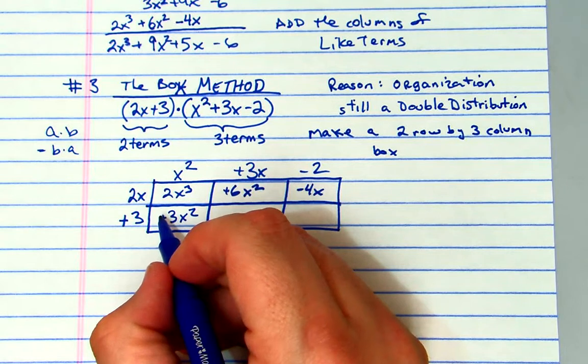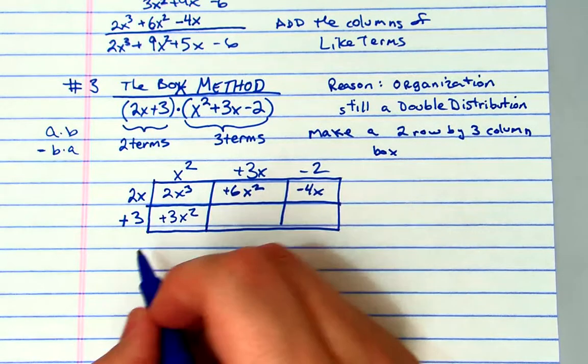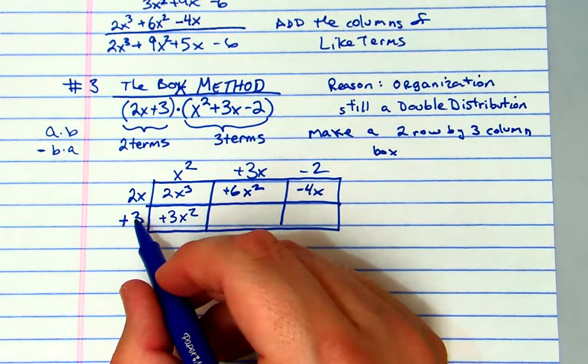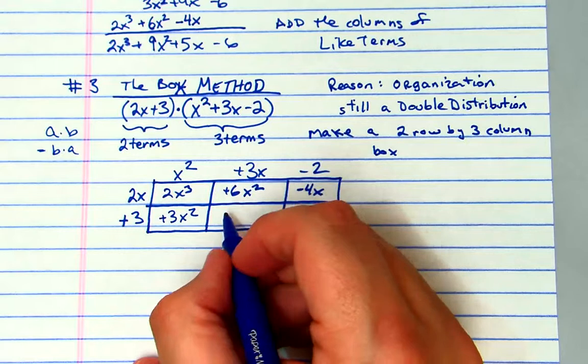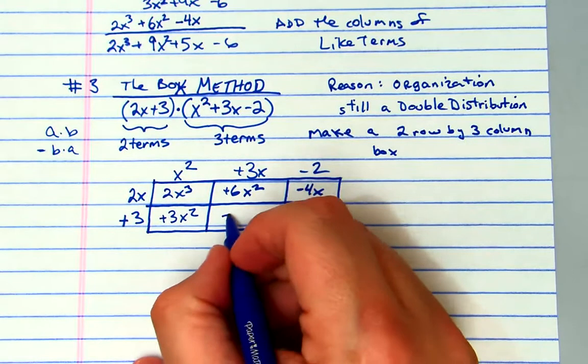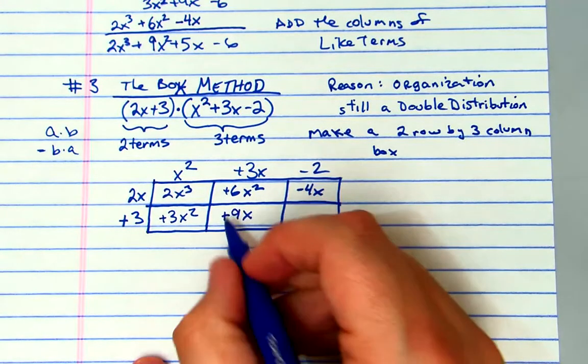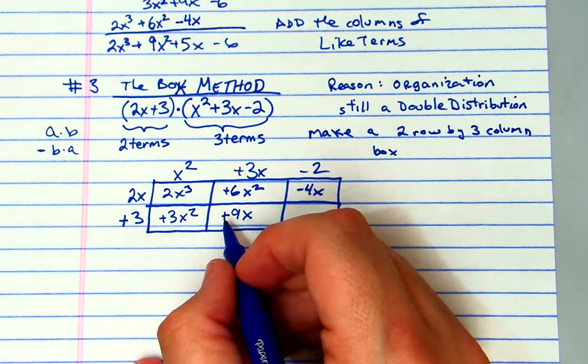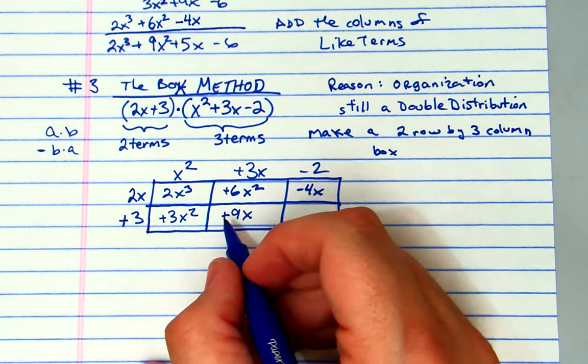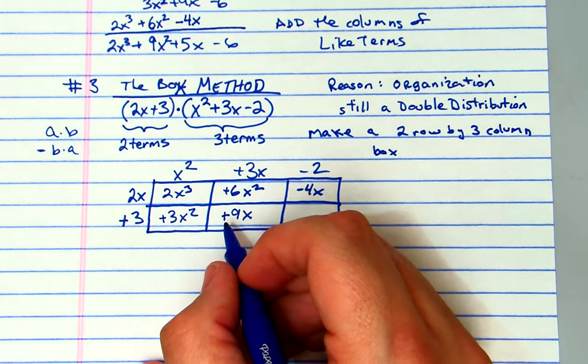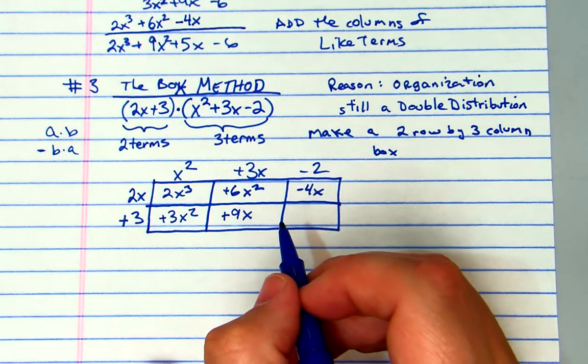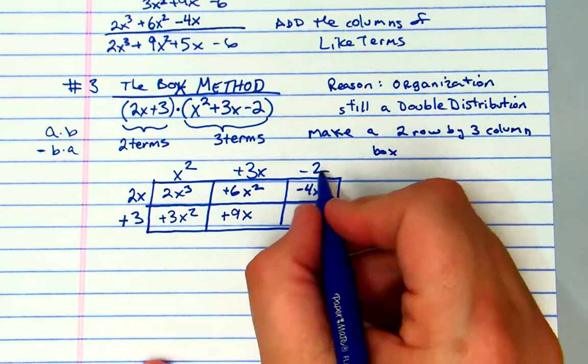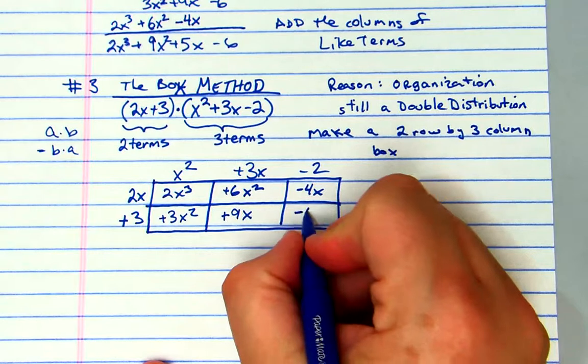Three, we're going to get a positive 3x squared. Yes, I like to put the positives there - this is going to help us later on when we use this to factor. Positive 3 times positive 3x is a positive 9x. Keep the positive or negative signs there because that'll tell you exactly what you have. Make sure you write neat too. Three times negative 2 is negative 6.